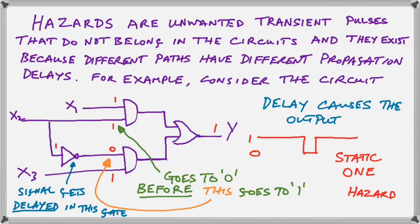Hazards exist because different paths have different propagation delays. You need to understand that when an input of a gate changes, the output cannot change exactly at the same instant. It takes a very small amount of time for the signals to change as it percolates down the signal chain.